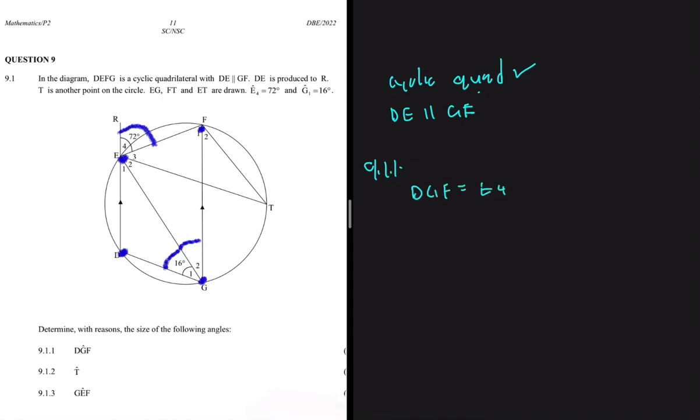But we know fully well that E4 is equal to 72 degrees. So DGF is equal to E4, and an exterior angle of a cyclic quad is equal to the interior opposite, and that is 9.1.1.